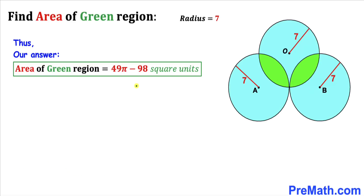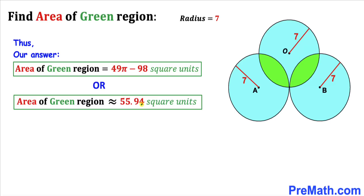So the area of this green shaded region turns out to be 49π − 98 square units, which is approximately equal to 55.94 square units. Thanks for watching and please don't forget to subscribe to my channel for more exciting videos.